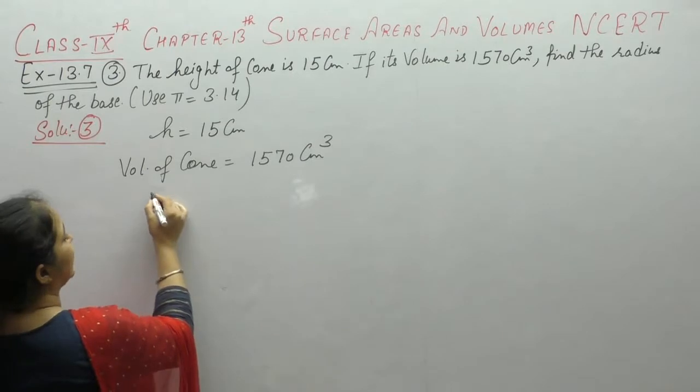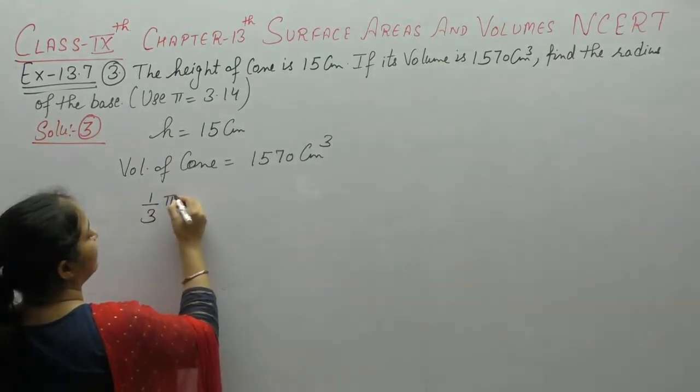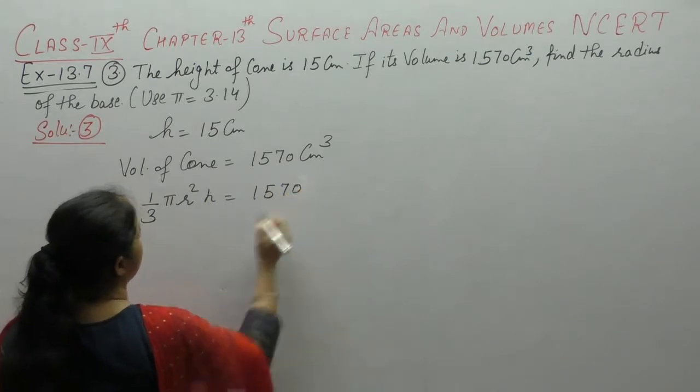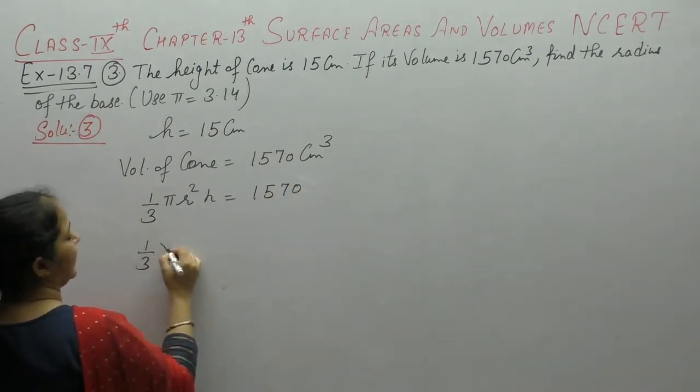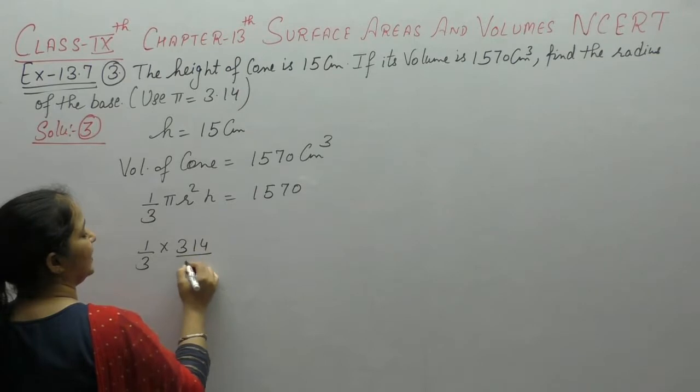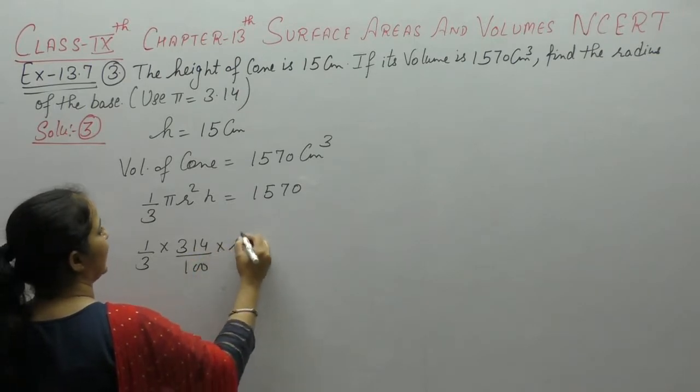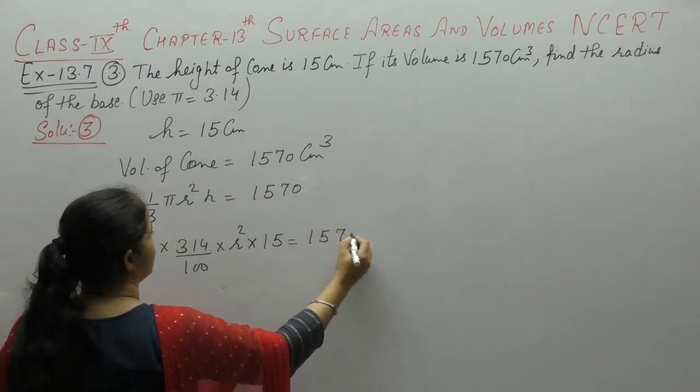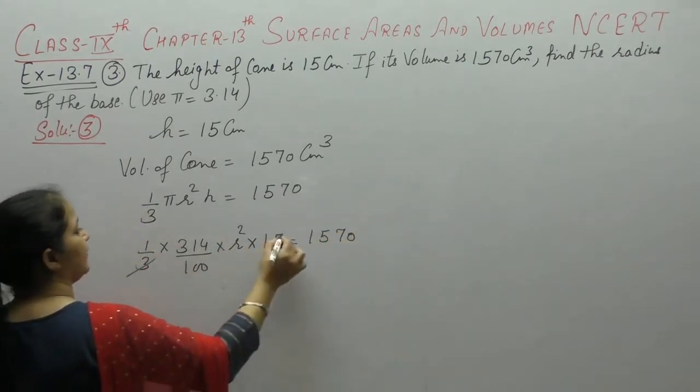Radius find karne, volume of cone 1 by 3 pi r square h is equal to 1570. Pi ki value use karne 3.14, radius find karna hai, height is 15, 1570, 3 fives are 15.